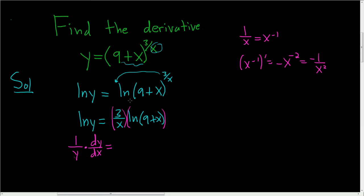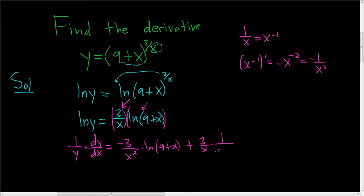So when we apply the product rule, the derivative of the first piece — negative 3 over x squared — times the second piece, natural log of 9 plus x, plus the first piece, 3 over x, times the derivative of the natural log. That derivative is 1 over 9 plus x. Then the chain rule says we take the derivative of the inside, which is 1.